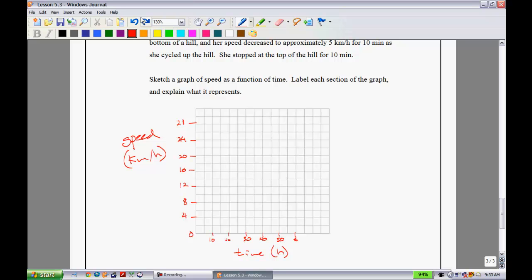Alright, so now we're ready to go ahead and graph her bicycle ride here. She starts at a stop speed, so we'll put the first dot right down here. And the first part of the ride says she accelerated until she reached a speed of 20 km an hour. Some people would put the first dot right at 20 there, but you have to be careful.